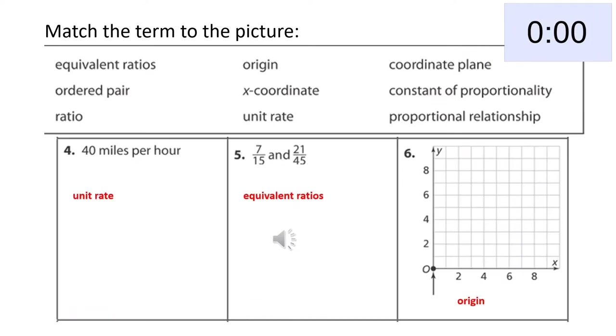And now we have the next three pictures. Number four, 40 miles per hour. Those are two different kinds of quantities. And when we can say 40 miles per one hour, we can see the one hour represents the denominator. So we can call that our unit rate. And then seven over 15 and 21 over 45 are equivalent ratios because any time you multiply or divide the numerator and denominator by the same value, you are making an equivalent ratio. So you can see that seven times three is 21, and 15 times three is 45. Or we could say 21 divided by 3 is 7, and 45 divided by 3 is 15. So that's why we recognize those two as equivalent ratios. And finally, for number six, the origin represents the 0, 0 ordered pair on the coordinate plane.